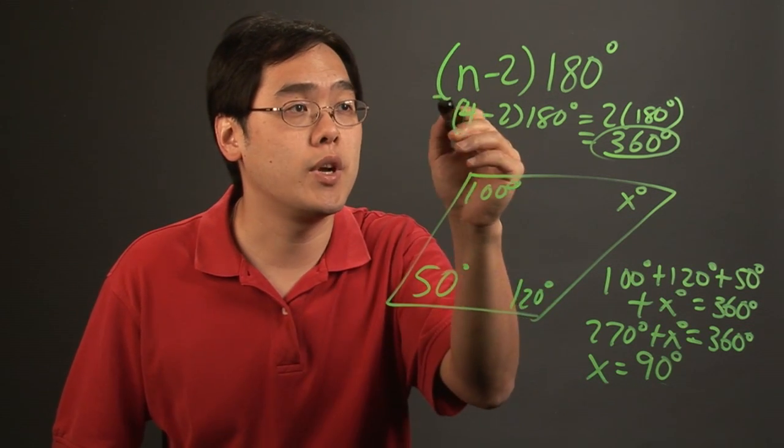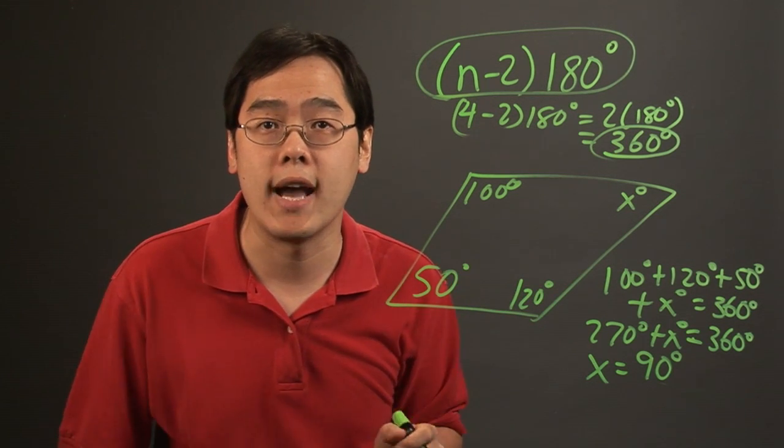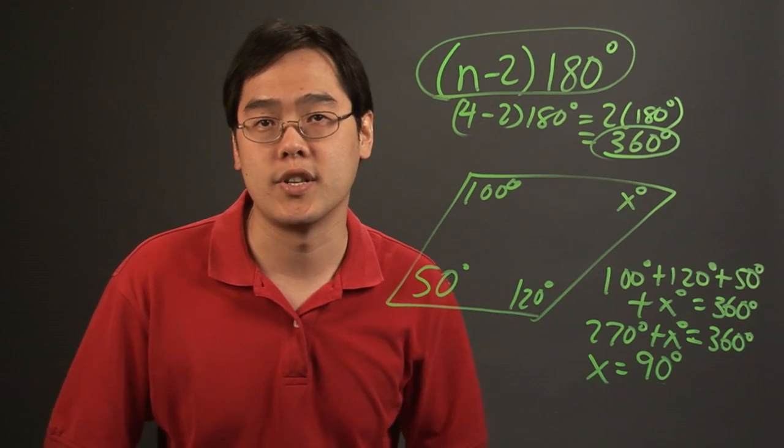But the bottom line is, you definitely want to use this formula to help you figure out what the total number is going to be. And then depending on how many angles that you have, plug in all the pieces, and then you'll find the missing one.